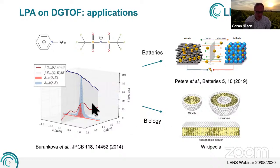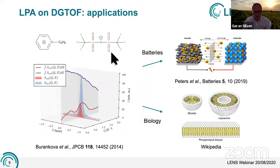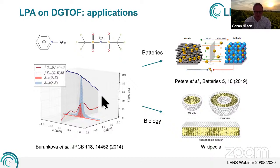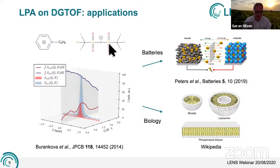A really nice example of this is work from 2014 by Tatyana Burankova at PSI, working with Jan Embs. This was done on an ionic liquid system consisting of two constituents — one with no hydrogen scattering primarily coherently, and one full of hydrogen scattering primarily incoherently. One can see the two quasi-elastic neutron scattering contributions from these constituents using polarized neutrons — blue representing the quasi-elastic signal from the coherent constituent, and red from the incoherent one. This is a very nice demonstration of the technique.